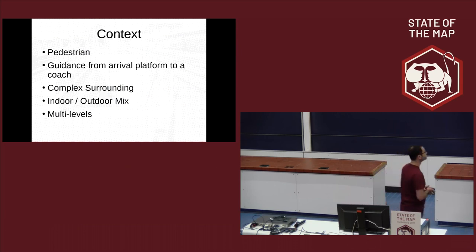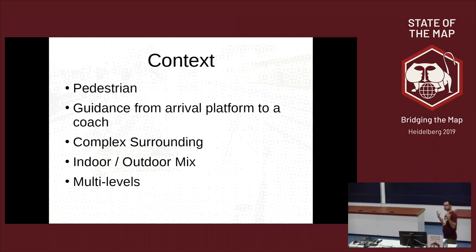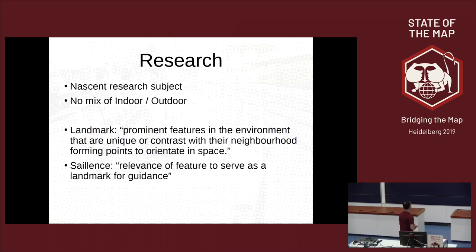The context is pedestrian in the station or in the surrounding area of the station. For example, you are coming with a train and you are trying to take a coach outside the station, and you have to go out to go somewhere in the surrounding and find the bus station. The train stations are complex areas, are multi-level, there is indoor and outdoor. The subject of enhancement of routing is a new subject. There are some article publications, but it's just nascent. There is, for example, no research on the indoor and outdoor at the same time.